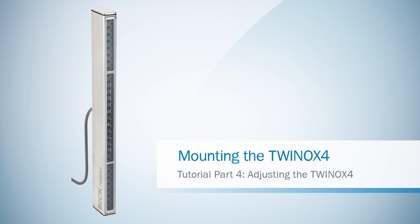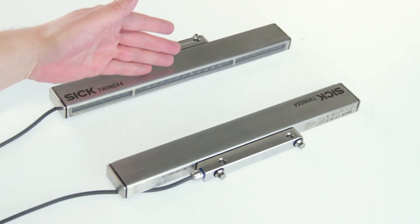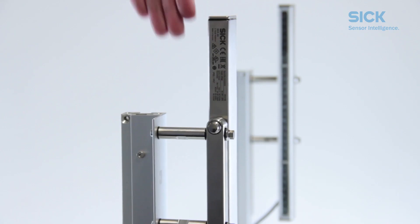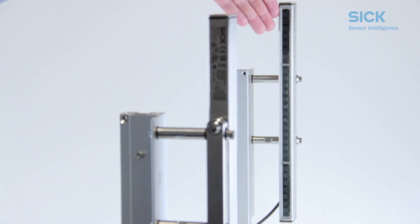After the TWINOX4 safety light curtain has been mounted and connected, the two twin sticks must be aligned with each other. What this means is that the beams of the sender optics must hit precisely the optics of the receiver unit.